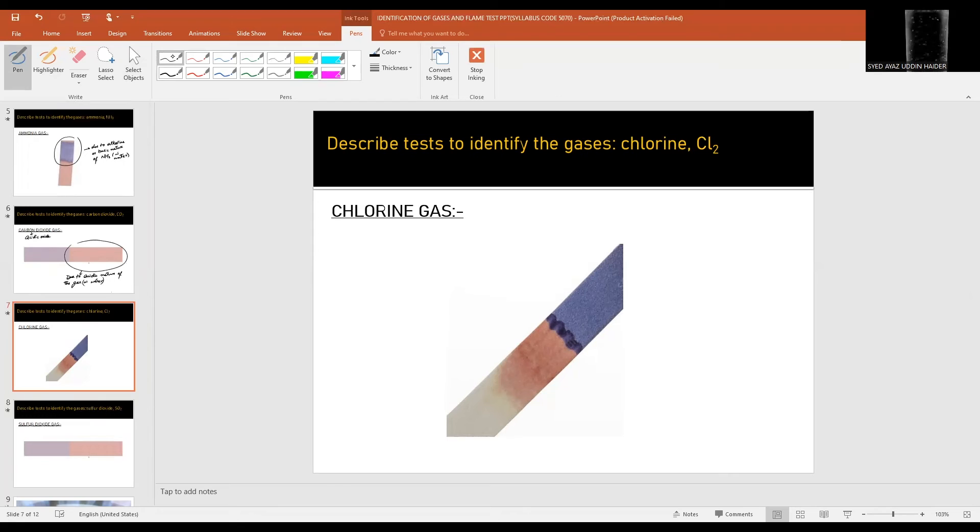Chlorine gas is acidic, not basic. So when moist blue litmus paper is brought near to the gas, it will turn it red and then bleaches it. This bleach is due to Cl2 gas.